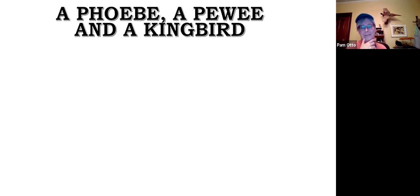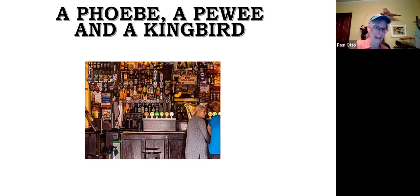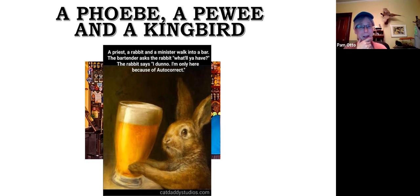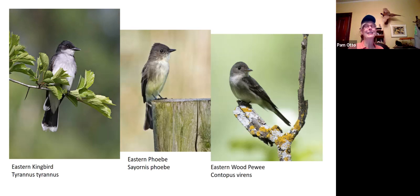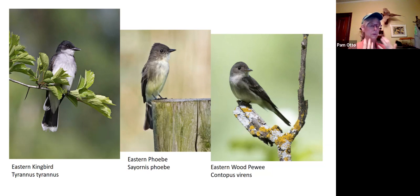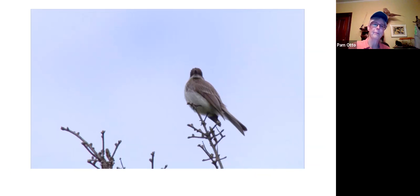Now let's look at three birds I feel pretty confident telling apart and want to share how I do that — the Eastern Phoebe, Eastern Wood-Pewee, and Eastern Kingbird. Let's start with the phoebe. This is a bird you don't really have to get a good look at — if you can see its outline and behavior you're in good shape. Here's some Fish and Wildlife video of a phoebe perched on top of a tree — watch the tail.